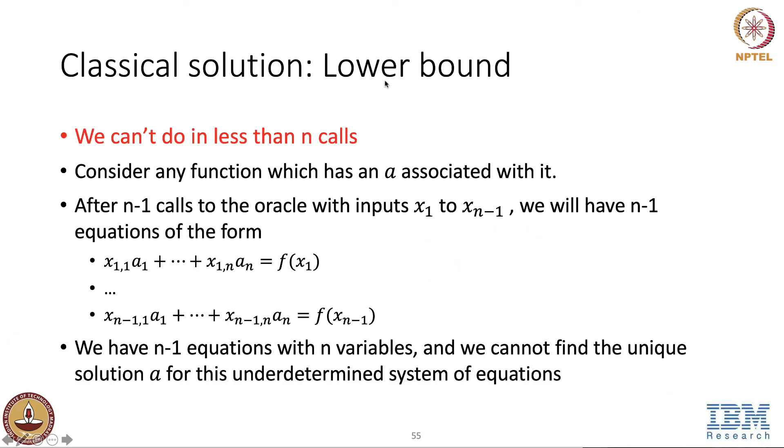We can also prove that we cannot do any better than these n calls to the oracle for a classical oracle. So consider that we have a function that has an a embedded in it. And then just writing the previous, what I said in the previous slide as set of equations, we have a1 to an and let x1 to xn minus 1 be the query. So x1 can be written as x11 till x1n and then xn minus 1 can be written as xn minus 1, 1 till xn minus 1 n because these are all n bit strings.